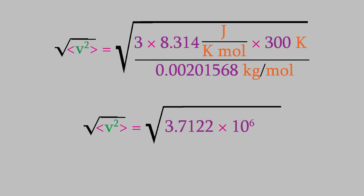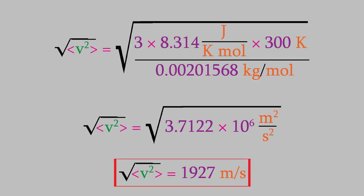As far as the units, the kelvins cancel out, and so do the kilograms and the moles. That leaves us with meters squared over seconds squared. Now, we'll take the square root, which gives us 1,927 meters per second. That's really fast, almost 2 kilometers per second. That reminds us that the molecules in a gas are moving very rapidly.